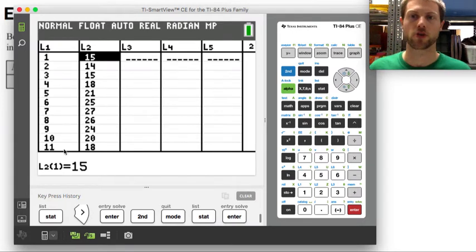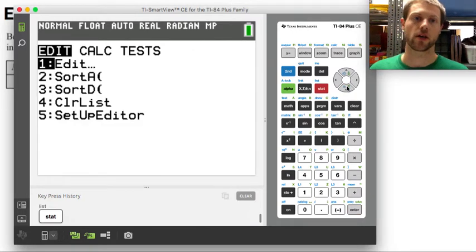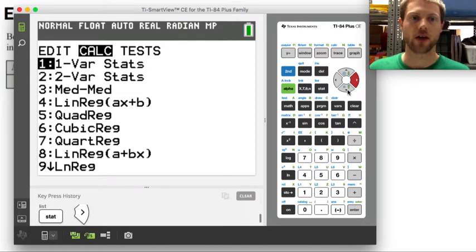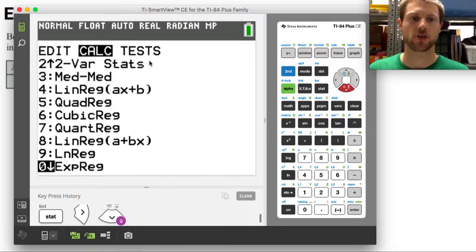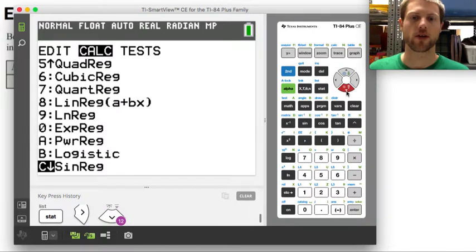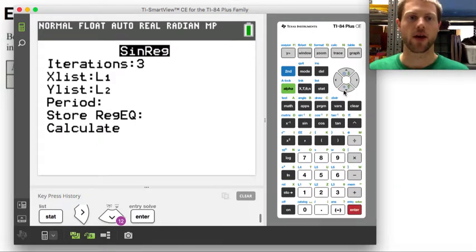Now that I've got my data in here, I'm going to calculate the regression by clicking on stat, going over to calc, and then I'm going to scroll down until I see the sine regression function. And there it is. So I'm going to hit enter.